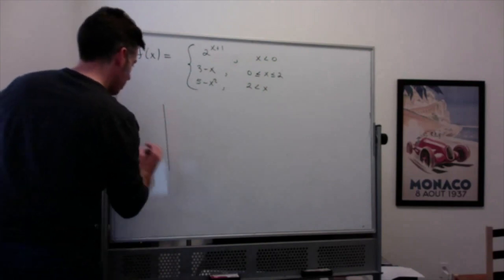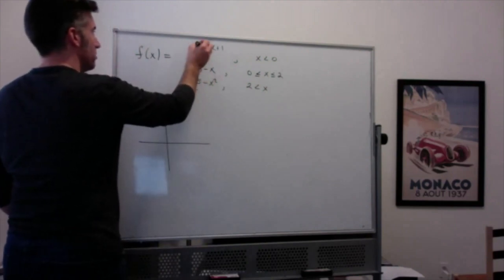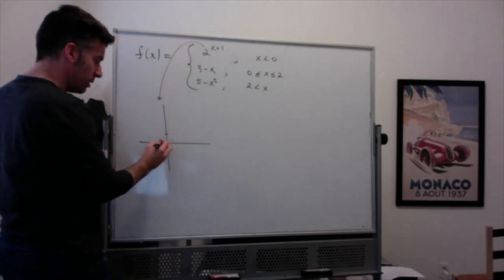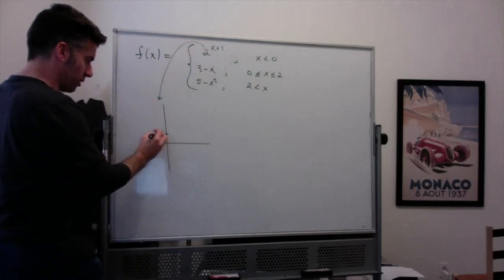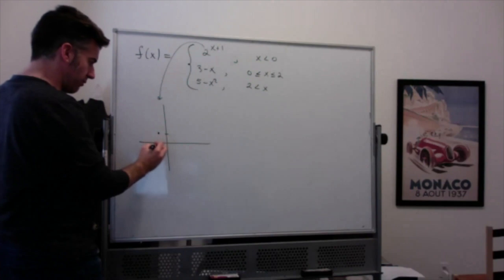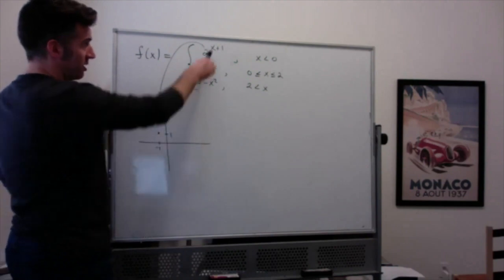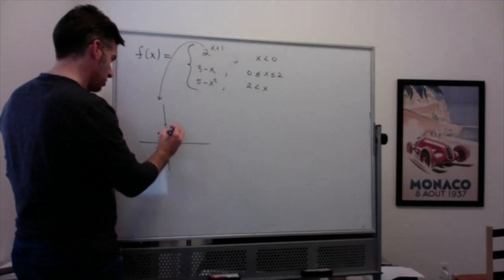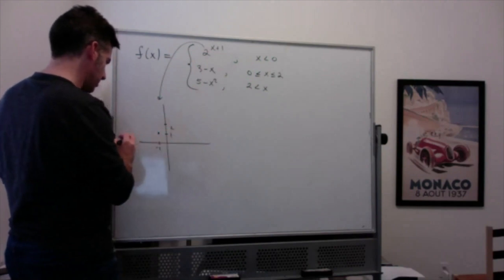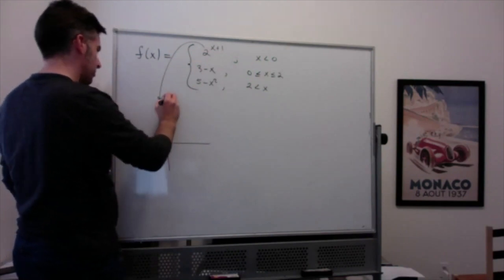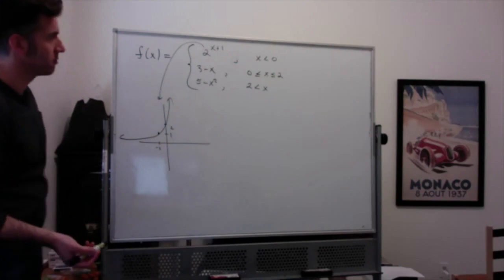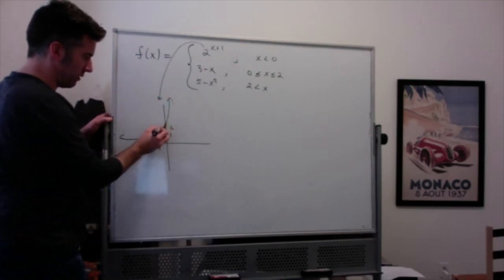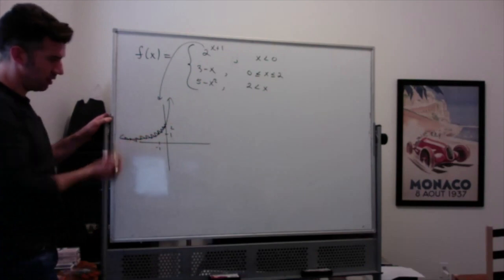I'll graph each piece. 2 to the x plus one is the usual exponential shape shifted one to the left — adding one inside shifts left. The point that was normally (0, 1) becomes (-1, 1), and plugging in zero gives the point (0, 2). We only want this when x is less than zero, so everything to the left of zero.